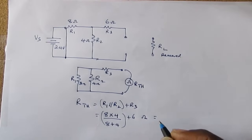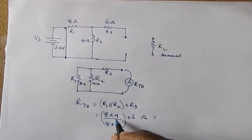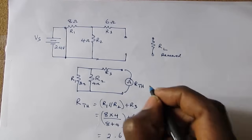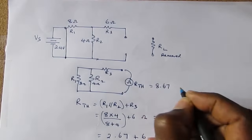Which equals 8 times 4 is 32 divided by 12 plus 6. So using the calculator, 32 divided by 12 equals 2.67, and we add the 6 and that gives us 8.67 ohms. So the R Thevenin equals 8.67 ohms.